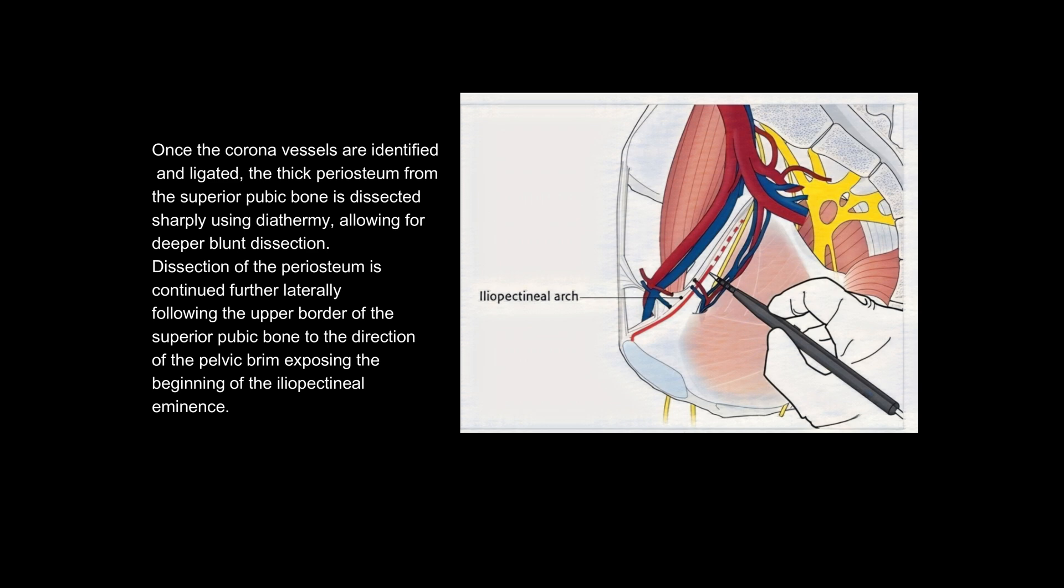the thick periosteum from the superior pubic bone is dissected sharply using diathermy, allowing for deeper blunt dissection. Dissection of the periosteum is continued further laterally, following the upper border of the superior pubic bone to the direction of the pelvic brim, exposing the beginning of the iliopectineal eminence.